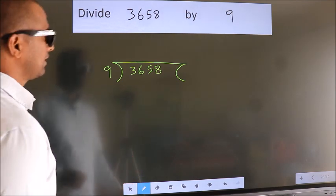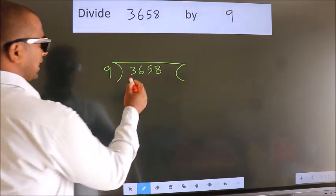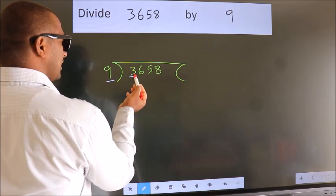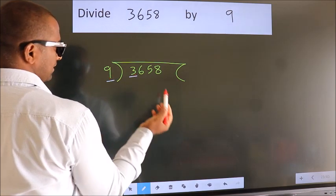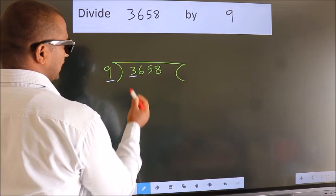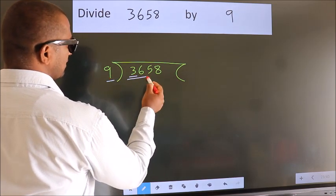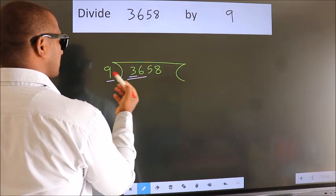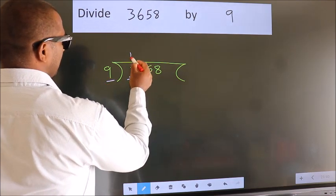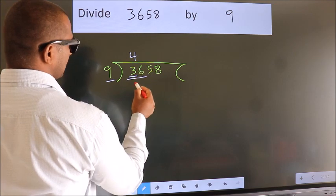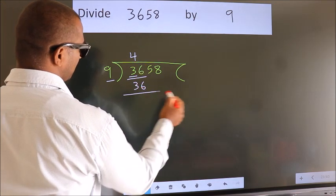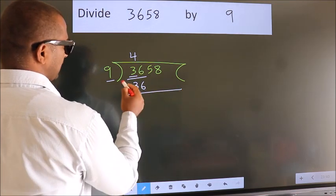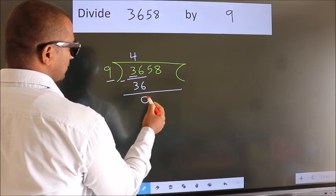Next, here we have 3 and here 9. 3 is smaller than 9, so we should take 2 numbers: 36. When do we get 36 in the 9 times table? 9 fours are 36. Now we should subtract, and we get 0.